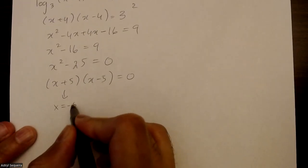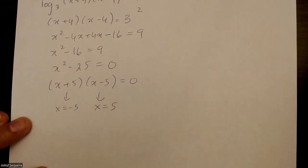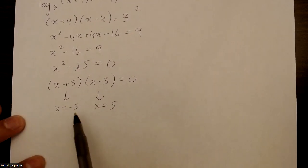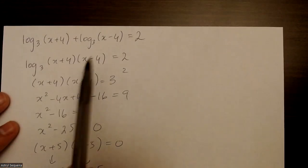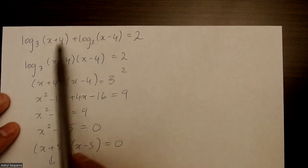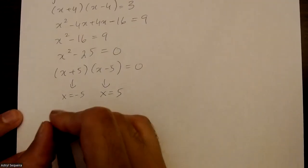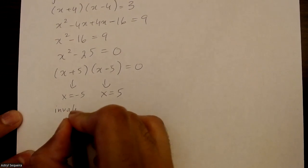So x equals negative 5 or x equals 5 are my possible solutions. But anytime you have a log equation, you should always check your solutions. If I put a negative 5 in these two brackets, I'll get negative numbers, and you cannot log a negative number. So this first solution here is invalid.